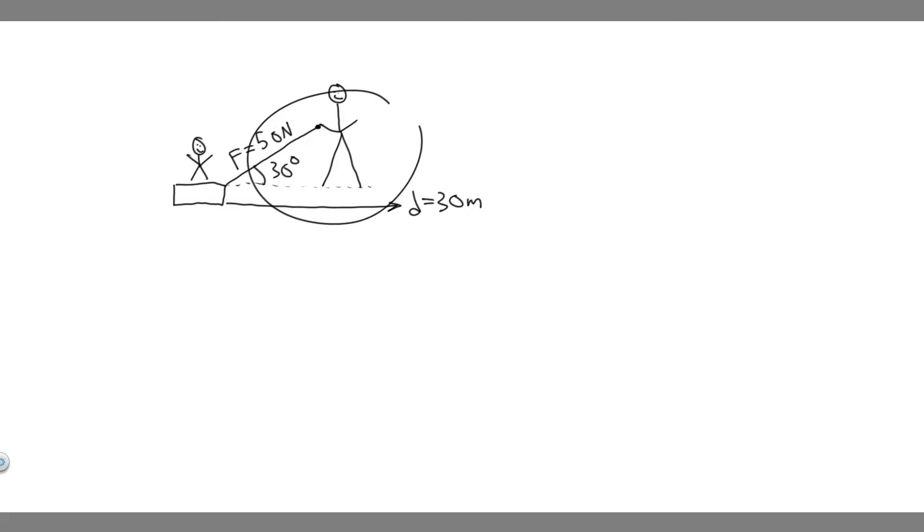In this problem, we have a boy exerting a force of 50 Newtons. He's going to be pulling his sister in this direction at an angle of 30 degrees to the horizontal, and he's going to pull her a distance of 30 meters.